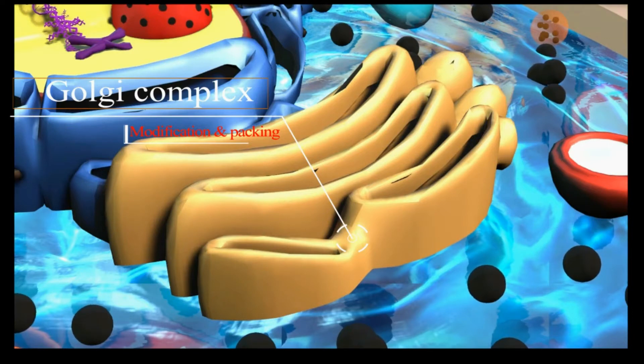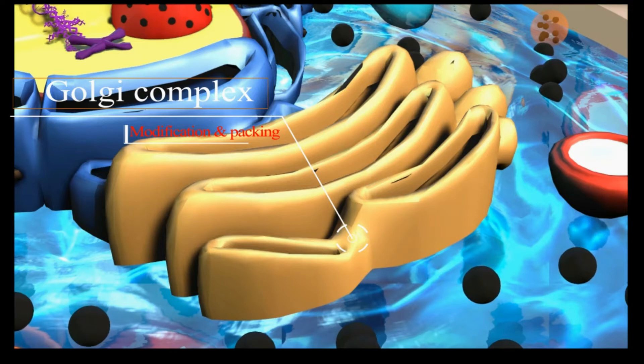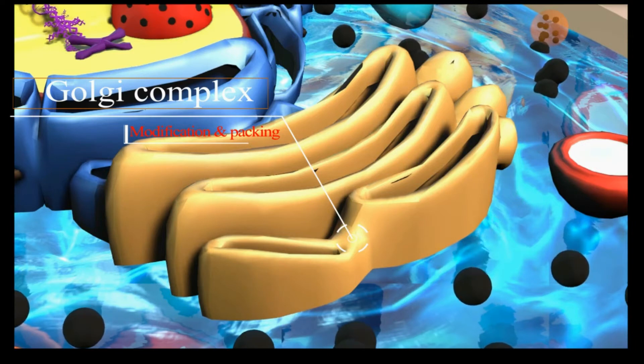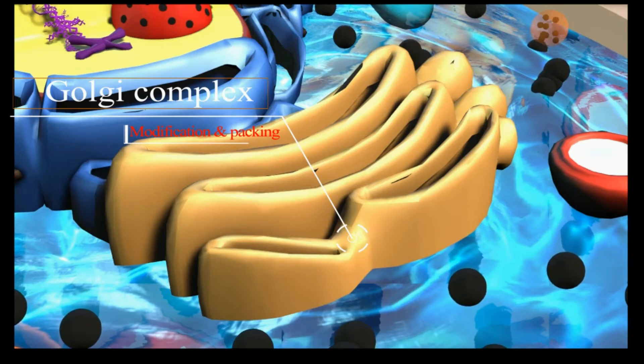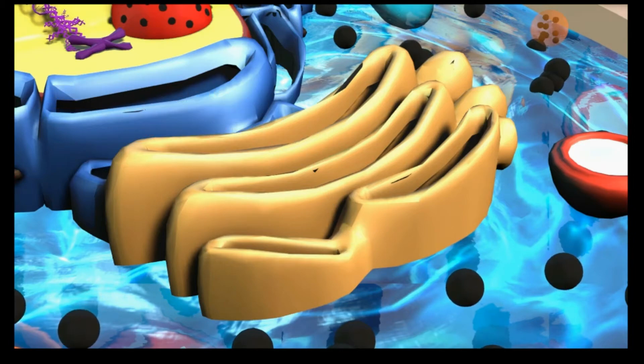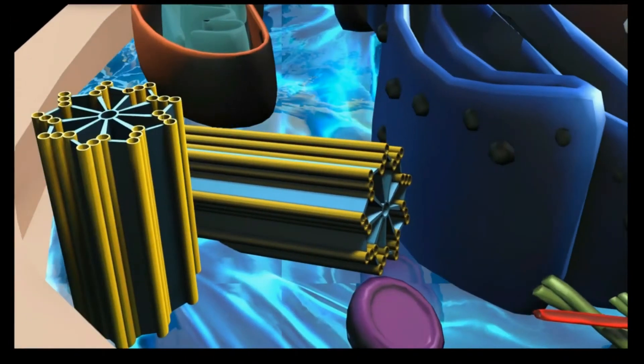The Golgi apparatus receives proteins and lipids from the rough endoplasmic reticulum. It modifies some of them and sorts, concentrates, and packs them into sealed droplets called vesicles.